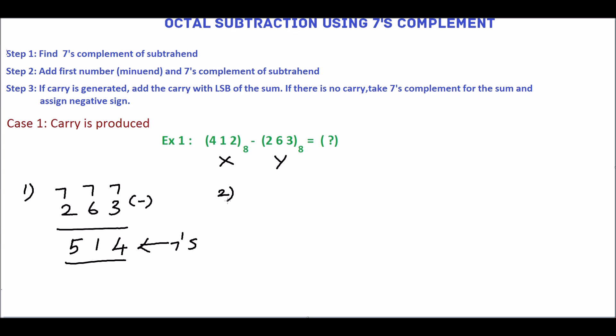In step 2, add x and 7's complement of y, which is 514. 2 plus 4 is 6, 1 plus 1 is 2, 4 plus 5 is 9. 9 is not an octal number.